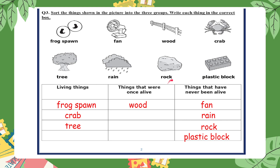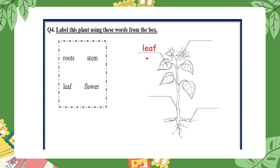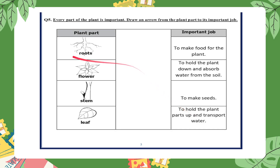Now let's revise the parts of a plant. In question four, label this plant using these words from the box: roots, stem, leaf, flower. This is a leaf, this is a flower, this is a stem, and these are the roots. In question five, every part of the plant is important — draw an arrow from the plant part to its important job.